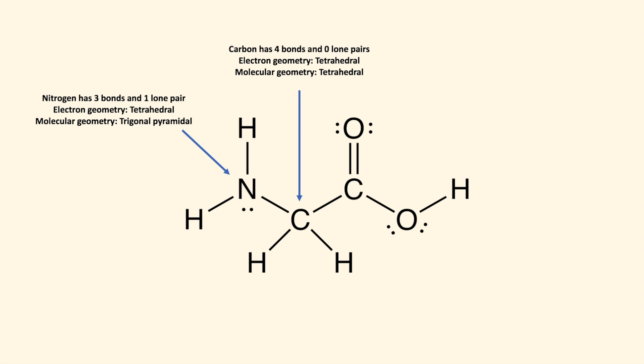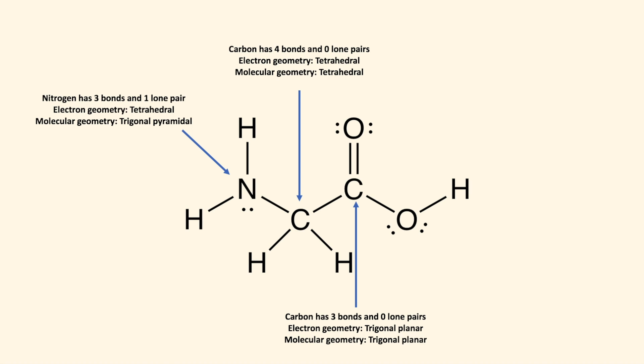The first carbon will have a tetrahedral electron and molecular geometry. The second carbon will have a trigonal planar electron and molecular geometry. And the oxygen on the end will have a tetrahedral electron geometry and a bent molecular geometry.